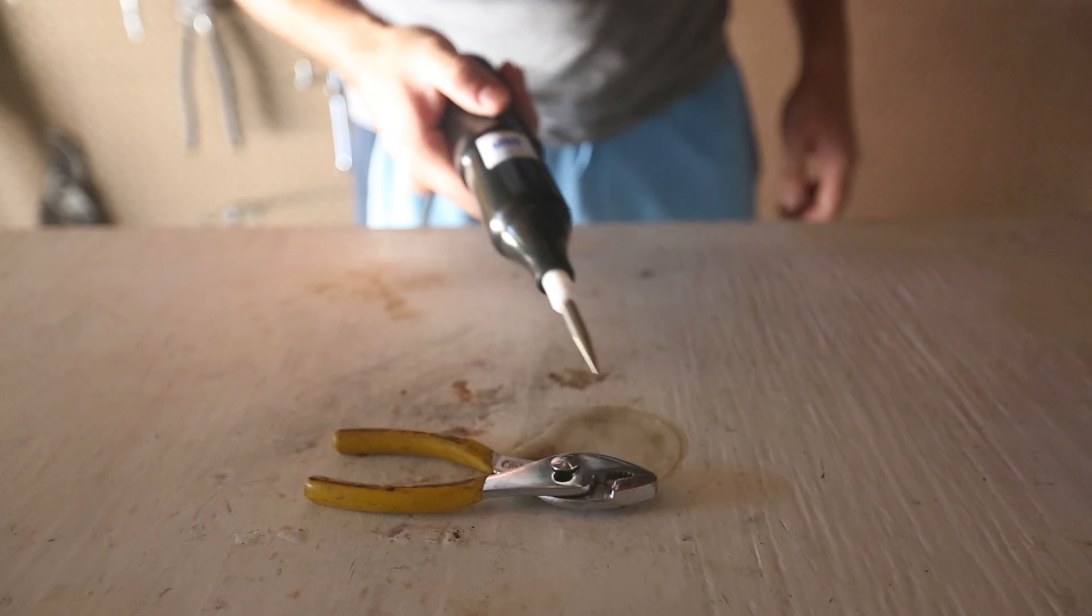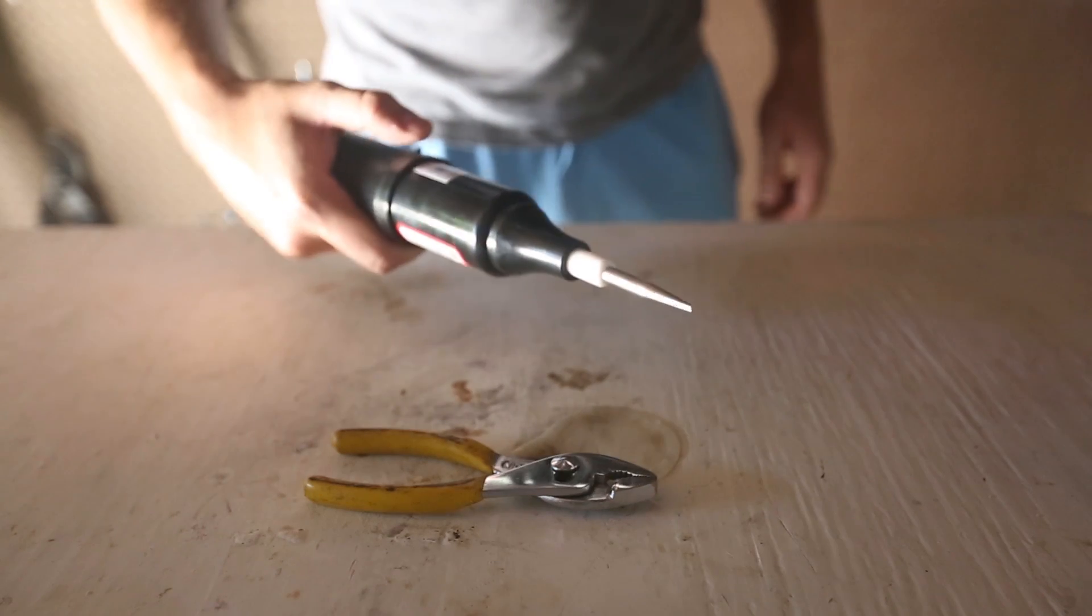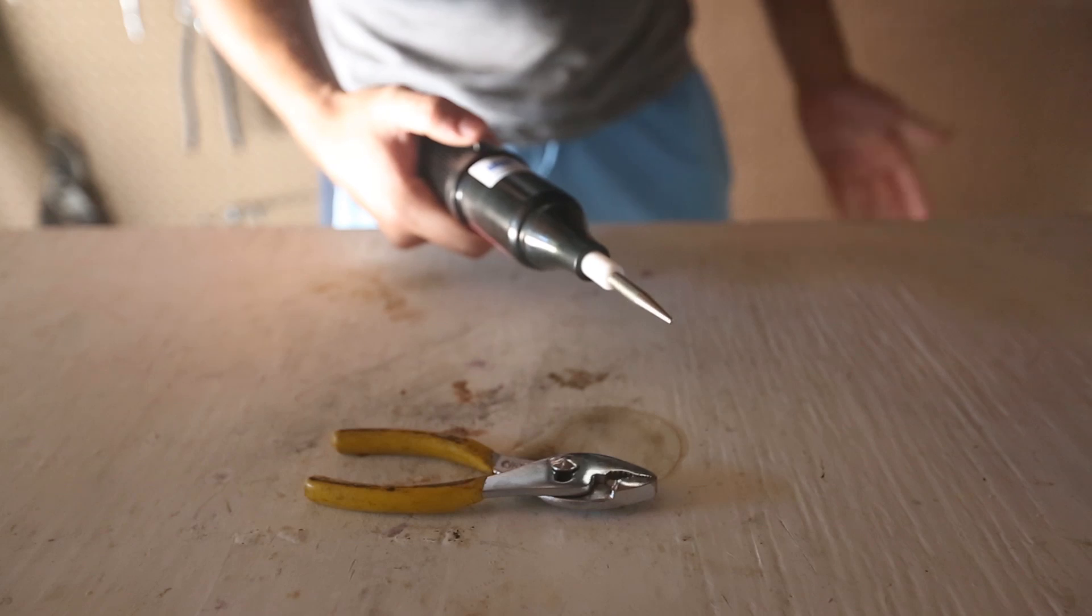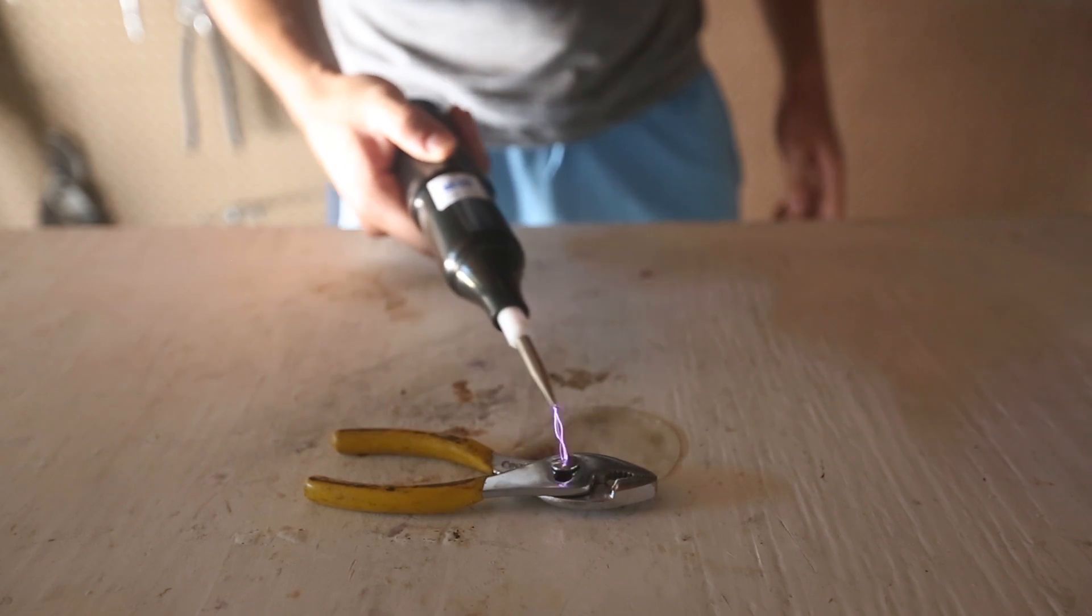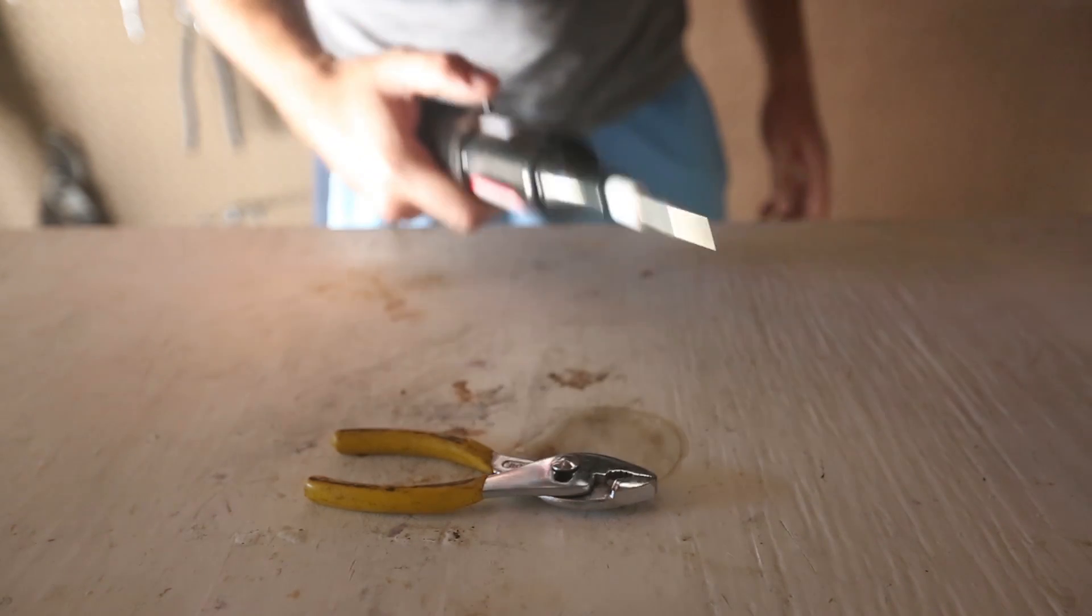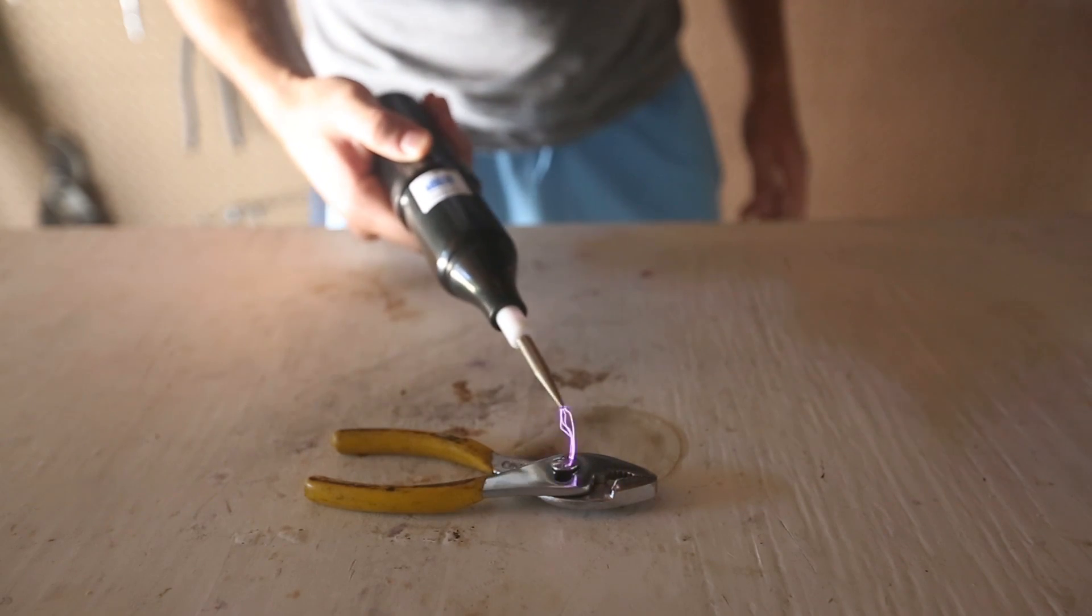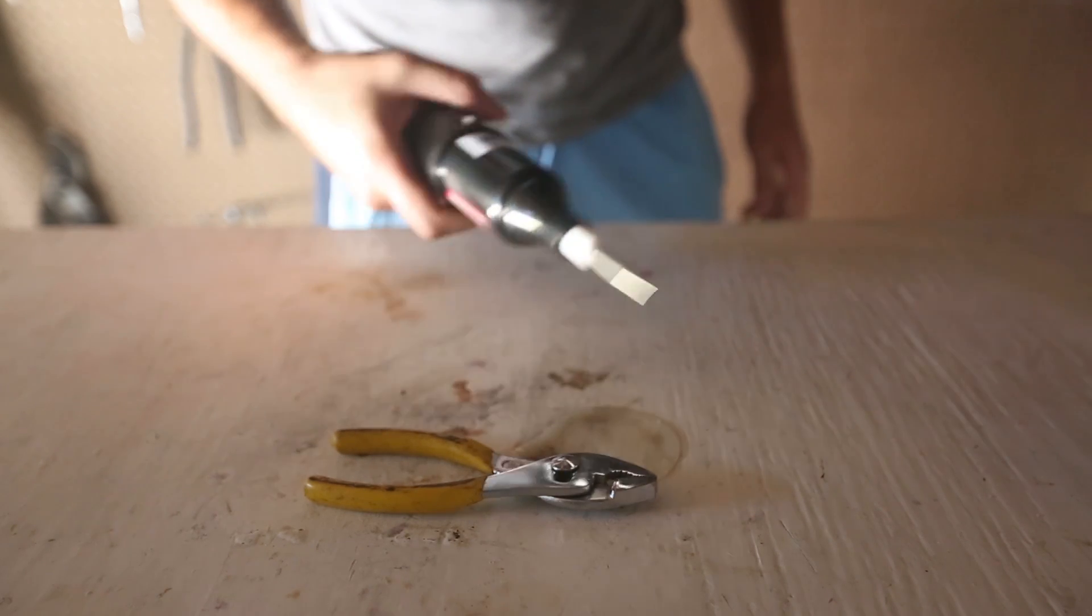So this little handheld Tesla coil is amazing for a lot of experiments. It is used for industrial purposes, also very dangerous. So I wouldn't let kids play with that. Look how beautiful it is. You gotta see the close-up for it.